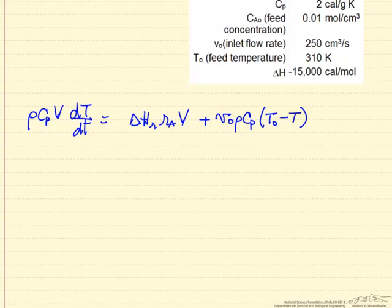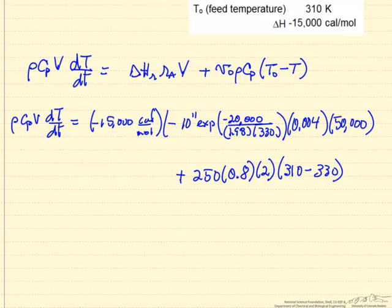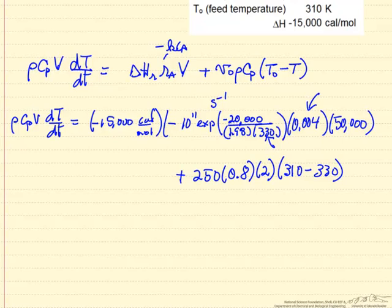Well we can substitute in numerical values here, and I've substituted in the values. Keep in mind now, the units of the rate constant, seconds to the minus 1, and this is minus kCa here. I put in the starting temperature in the system, and I put in the starting concentration. These are the conditions that we want to know whether the temperature increases or decreases.